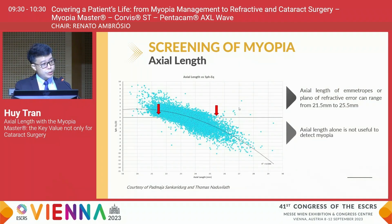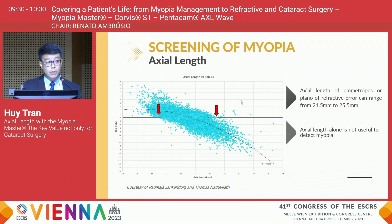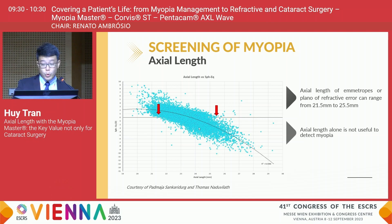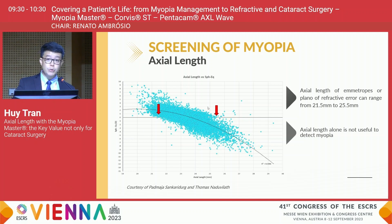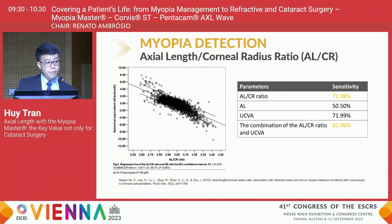We should acknowledge the work from the Brian Holden Vision Institute team. On their graph, the vertical axis represents spherical equivalent and the horizontal axis represents axial length. The axial length for emmetropes can range from 21.5 to 25.5 millimeters, so axial length alone is not useful to detect myopia. To diagnose myopia, eye care practitioners should consider other parameters including age, gender, and corneal curvature. A more sensitive parameter is the ratio of axial length over corneal radius — the ALCR — especially in younger ages.